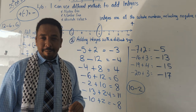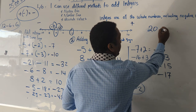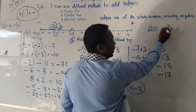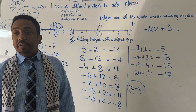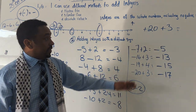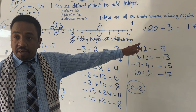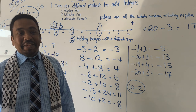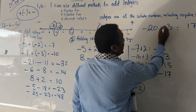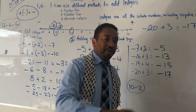Aliyah asks about plus 20 minus 3. What is 20 minus 3? 17. So the answer is 17. Then what about minus 20 plus 3? The big number is carrying the negative, so the answer will be minus 17. Now you understand.